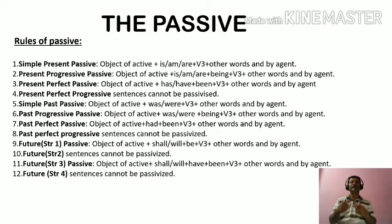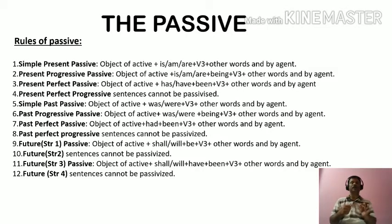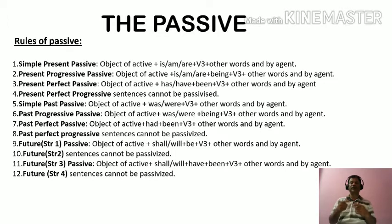Now let us go through the second one, that is present progressive passive. The rule is: the object of active plus is, am, or are plus being plus V3 plus other words and by agent. Then the third one, that is present perfect passive. The rule is: the object of active plus has or have plus been plus V3, that is past participle form of the verb, plus other words and by agent.